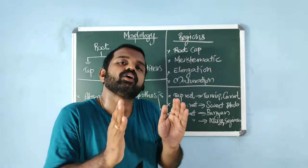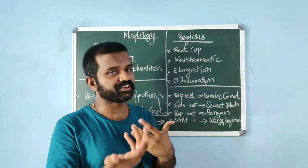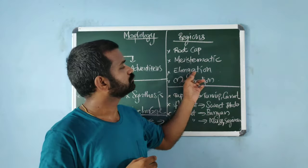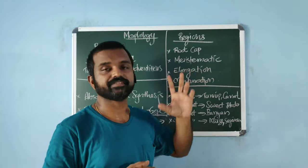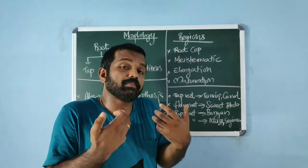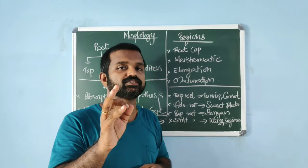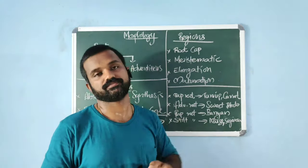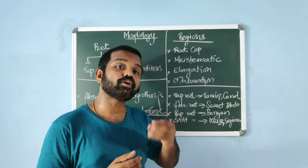Cells gradually differentiate and become mature in the maturation zone. From this zone, epidermal hairs called root hairs arise, which are responsible for absorption. Root modifications: the tap root is modified for food storage in turnip and carrot. Adventitious roots are modified for food storage in sweet potato.